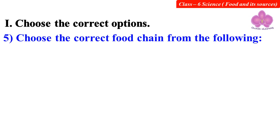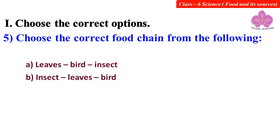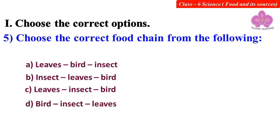Choose the correct food chain from the following. Option A: Leaves, bird, insect. Option B: Insect, leaves, bird. Option C: Leaves, insect, bird. Option D: Bird, insect, leaves. Answer: C. Leaves, insect, bird.